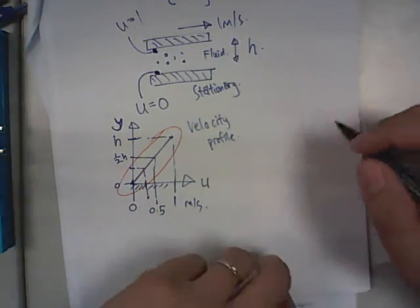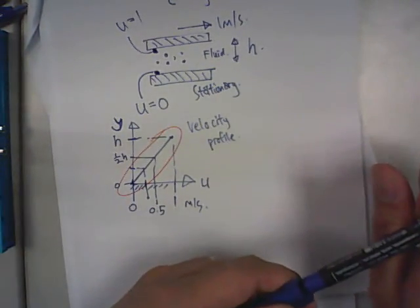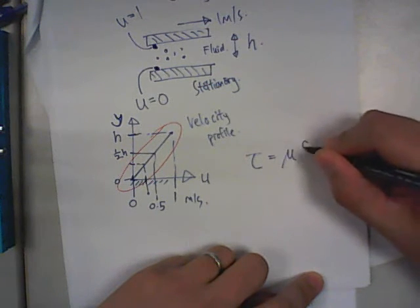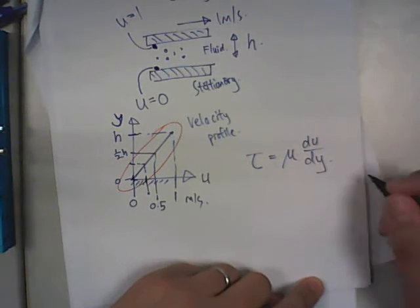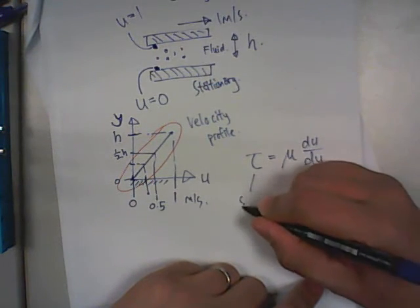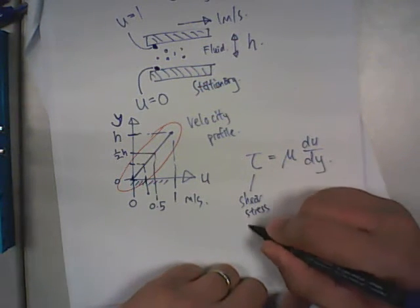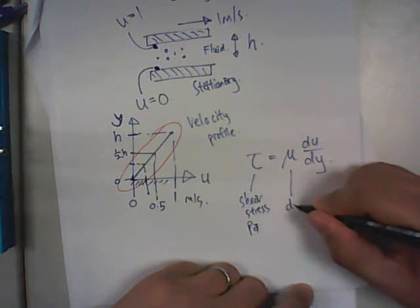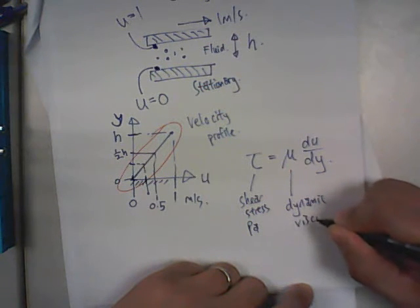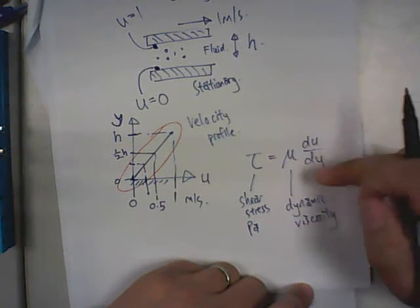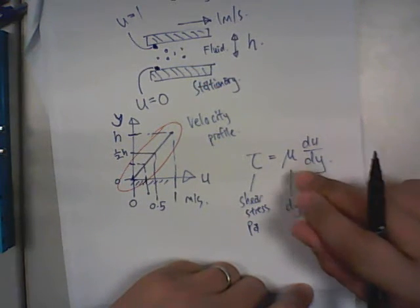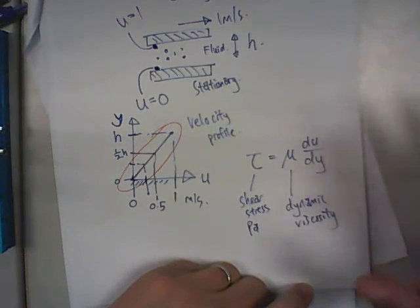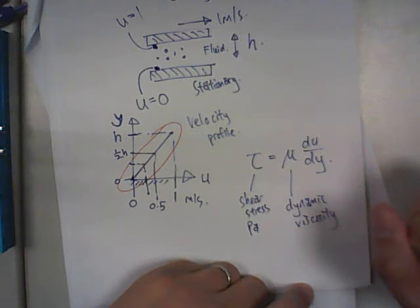So why is this useful for us? Because you will realize that you need to calculate for the shear. And the shear equation is τ equals μ du by dy. What does this mean? This is the shear stress. The unit is in Pascals or Newton per meter square. This Greek letter μ is what we call the dynamic viscosity. This is the property of the fluid. It indicates how much resistance the fluid has to movement. For example, between oil and water, oil should have a higher viscosity than water.